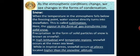As the atmospheric conditions change, we see changes in the forms of condensation. Snow: When the temperature in the atmosphere falls below the freezing point, water vapor directly turns into snowflakes. This is called sublimation. Here, the vapor in the form of gas transforms into solid snow. Precipitation in the form of solid particles of snow is known as snowfall.